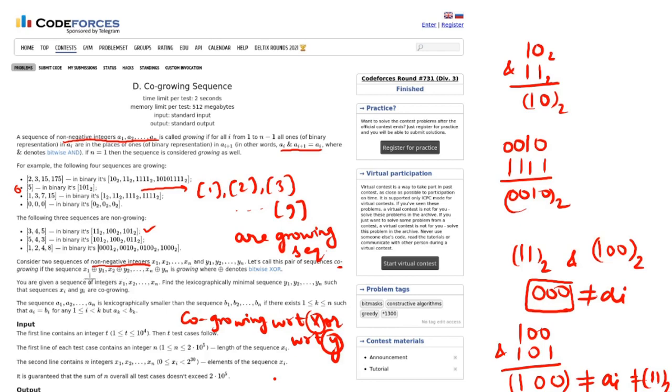And if the sequence x1 XOR y1, x2 XOR y2 and so on is called growing, where this is bitwise XOR.